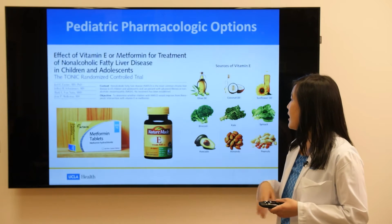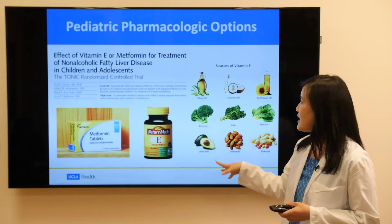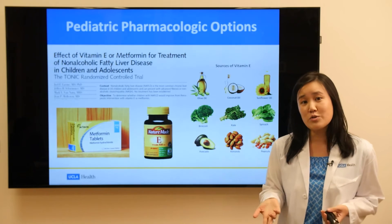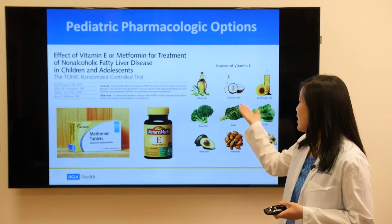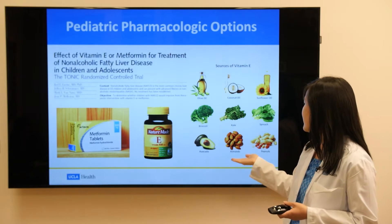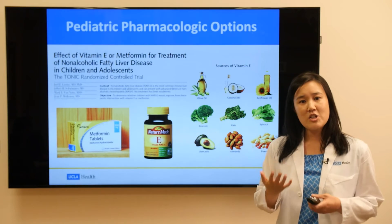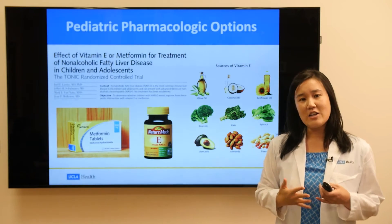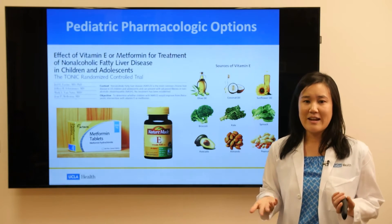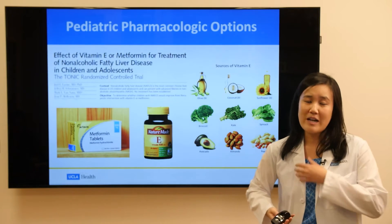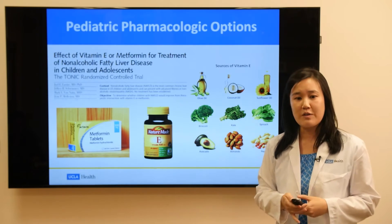I encourage my patients to look for natural sources of vitamin E instead of taking a pill. Vitamin E can be found in olive oil, broccoli, avocado, almonds, and peanuts. By simply changing your diet, you can get more vitamin E. Vitamin E is known as an antioxidant, which has been shown to help with fatty liver.